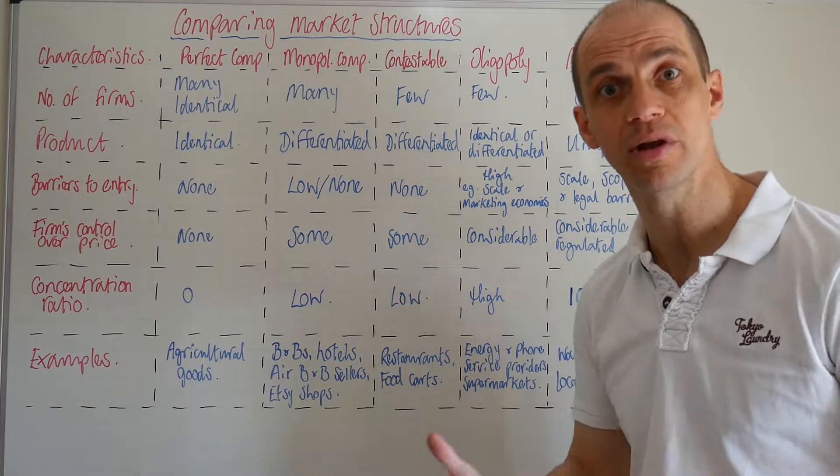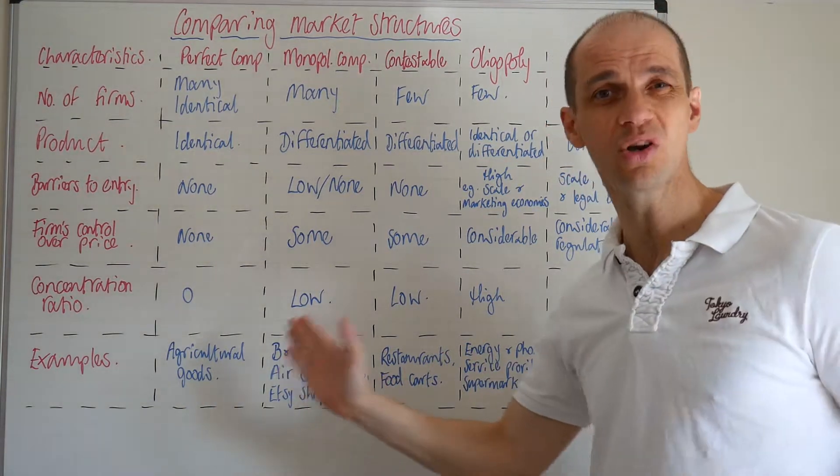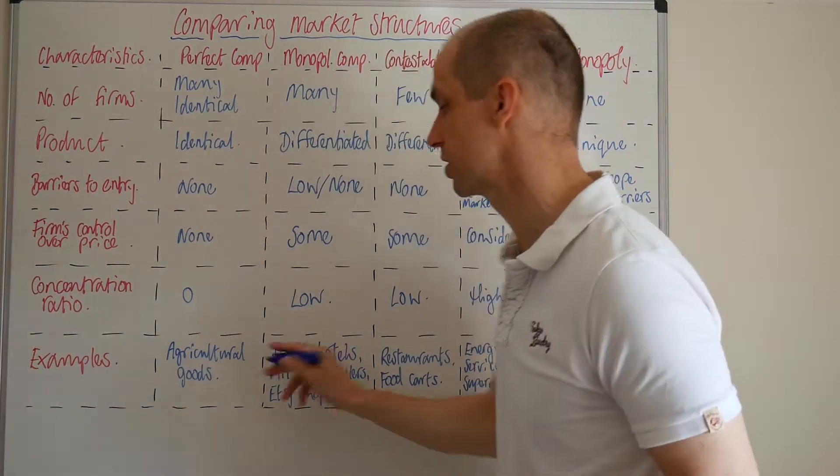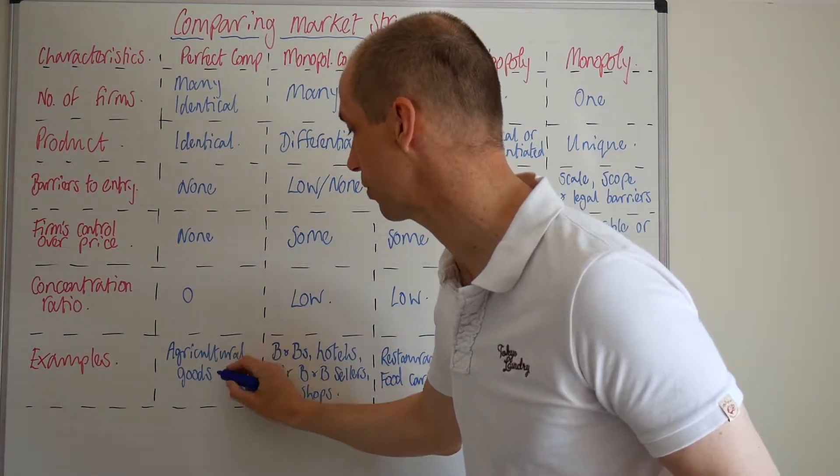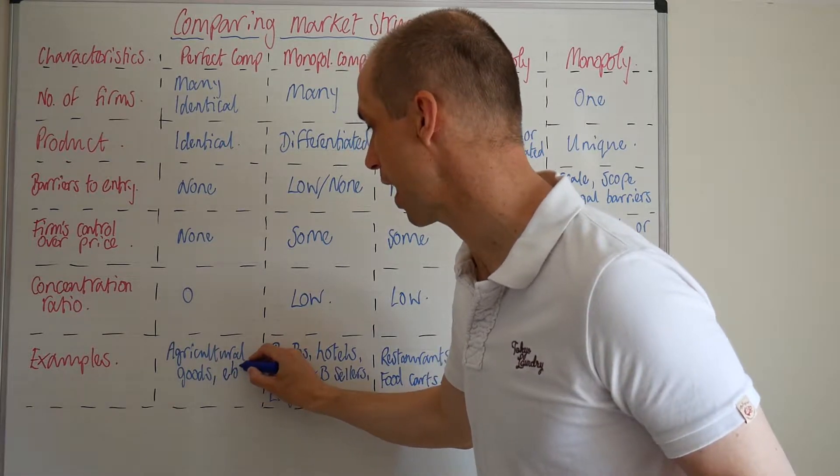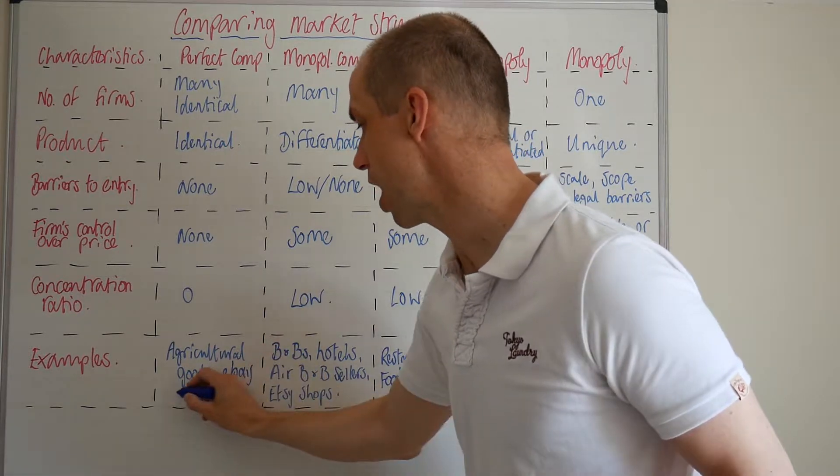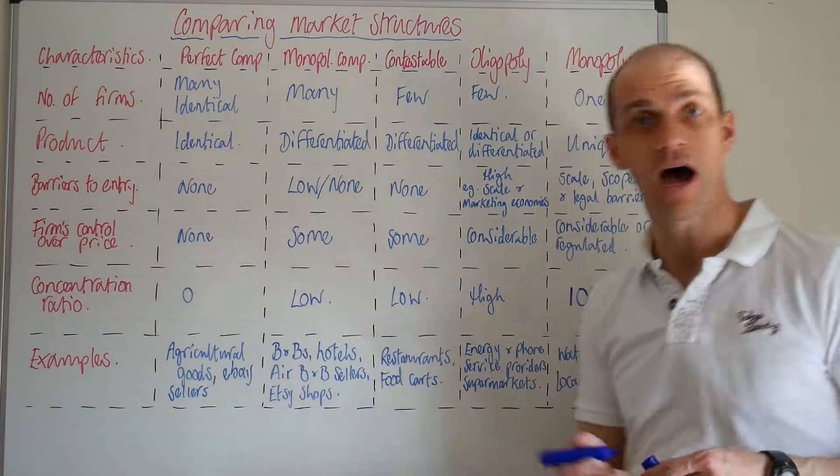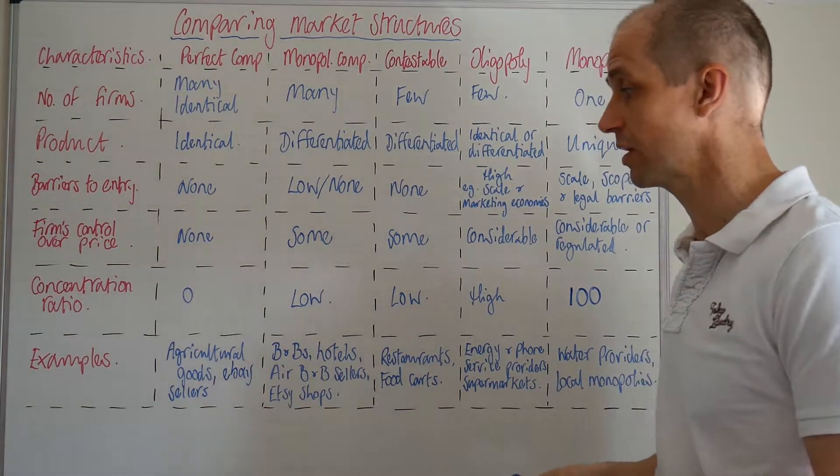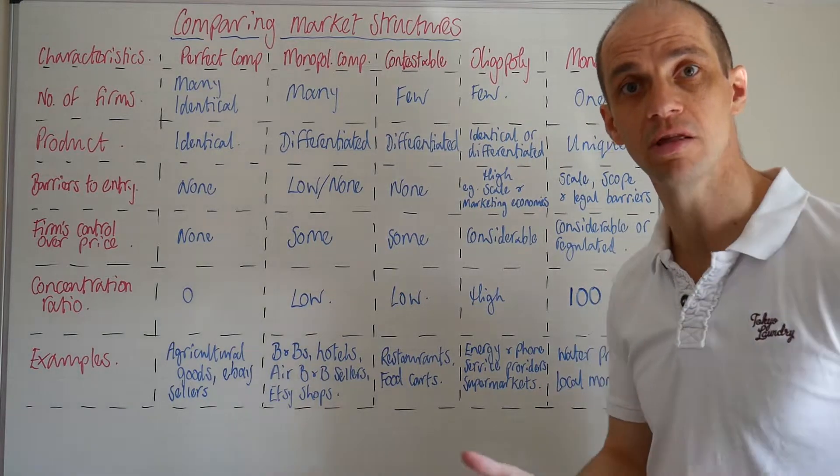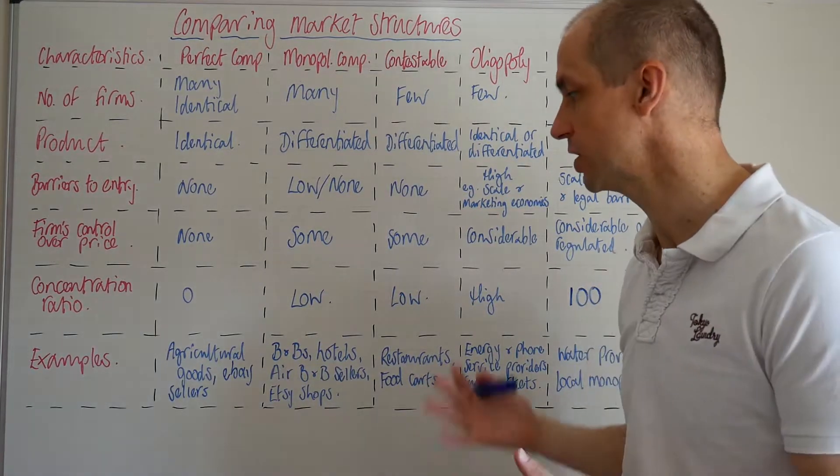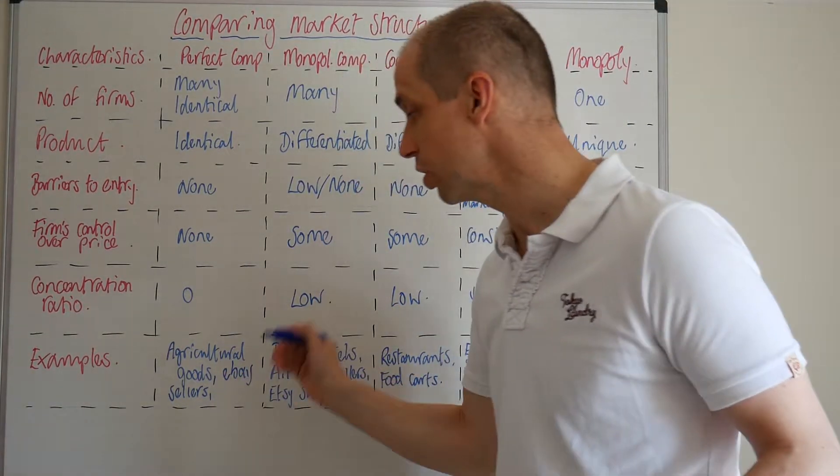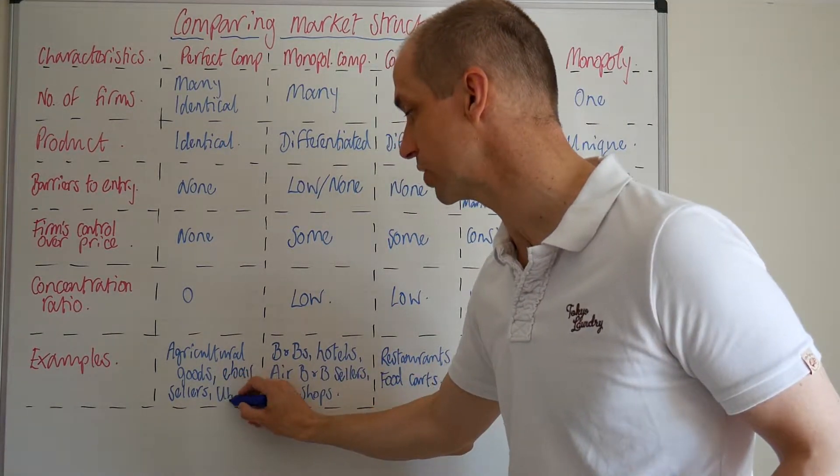Great examples include agricultural goods. But you could also extend that. Some useful examples, if you wanted to consider technology and the impact of technology, could be perhaps eBay sellers, where they're just reselling various goods and they are price takers in effect. There's perfect information in the marketplace so you can compare prices very easily as a consumer or as a business.